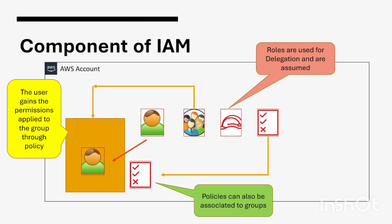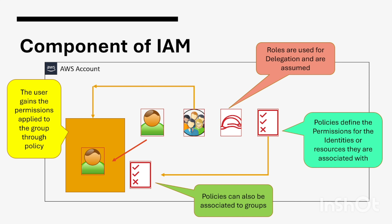Roles are very important and we will have a complete detailed discussion about them in upcoming sections. Roles are used for delegation and they are assumed. We can create a role and assign it to a user or an application, and that application will assume that role and act accordingly. A policy defines the permissions for the identities or resources it is associated with.